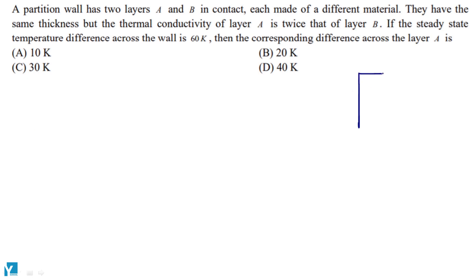So we have a partition with two different materials, A and B. The area and thickness are the same, but the thermal conductivity of A is twice that of B. So these two series combinations have been connected.